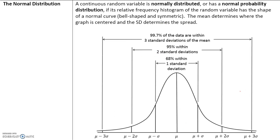The normal distribution: a continuous random variable is normally distributed if it has a normal probability distribution. That means the histogram of the random variable has the shape of a normal curve, which is bell-shaped and symmetric.